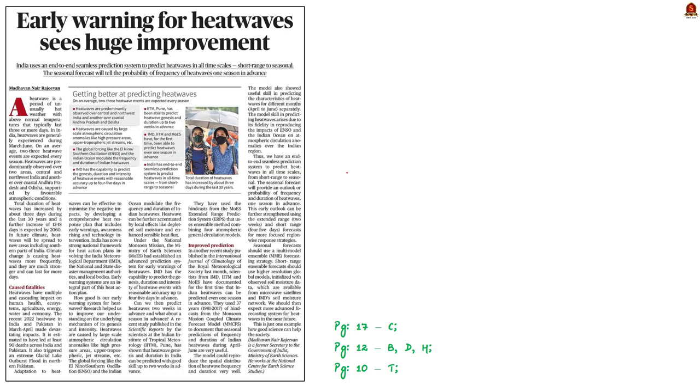Take a look at the science page article. It talks about heat waves. The article says that many improvements were made in the process of predicting and reporting of heat waves in India. The article also speaks about the recent study published in the scientific reports by the scientists at the Indian Institute of Tropical Meteorology, Pune. The studies have shown that the heat wave genesis and duration of heat waves in India can be predicted with a good skill up to two weeks in advance. In this context, let us see about heat waves in detail.